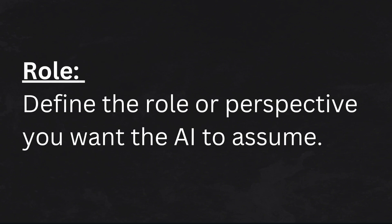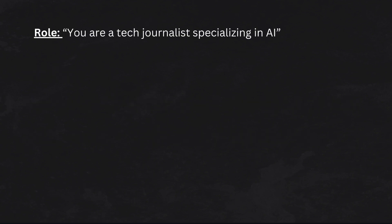First, the R: Role. Assigning a role is the first step towards better AI results. Why? Because context matters. If you ask 'write a blog post,' you might get something bland and generic. But if you say 'you are a tech journalist specializing in AI,' you'll set the tone and style before the AI even starts writing.